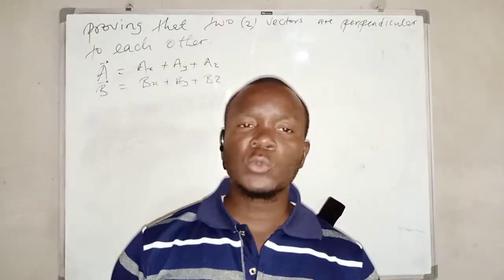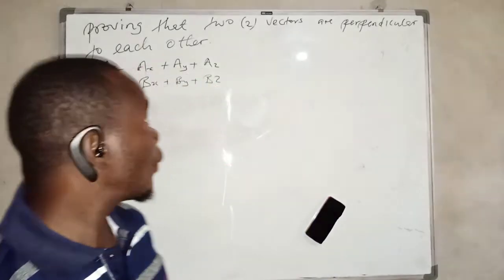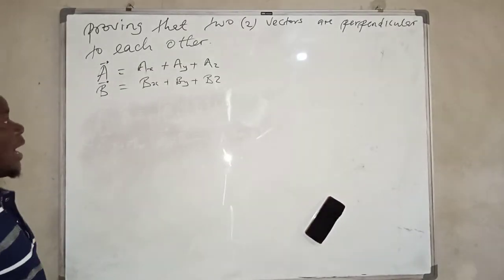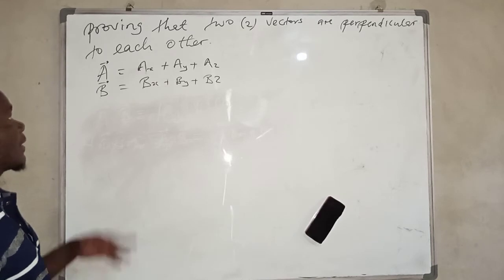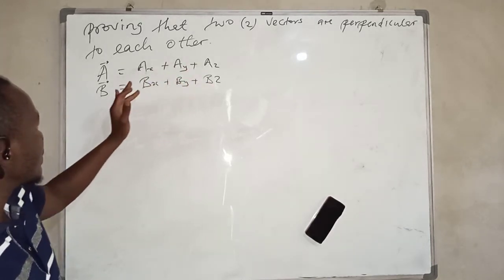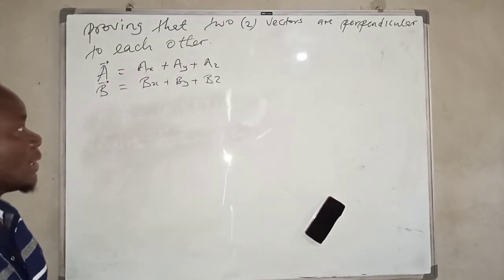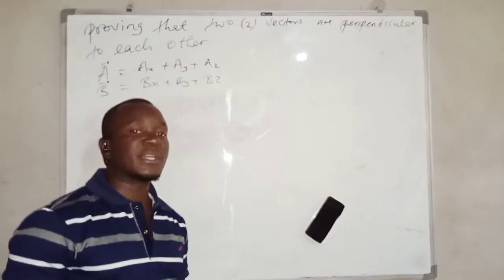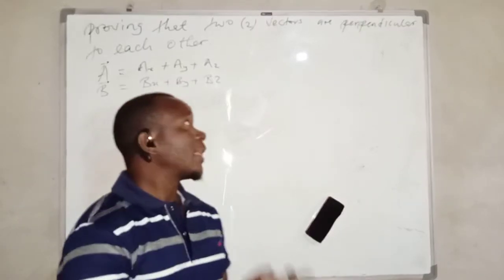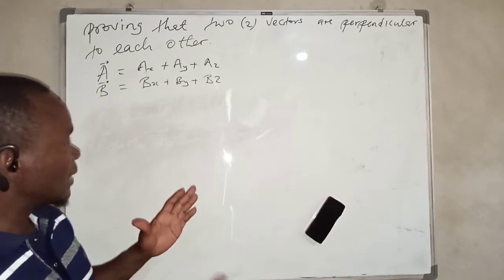In this video we are going to learn how to prove that two vectors are perpendicular. We have been given two vectors, vector a and vector b, where vector a equals ax plus ay plus az, and vector b equals bx plus by plus bz. We are going to prove that these two vectors are perpendicular.